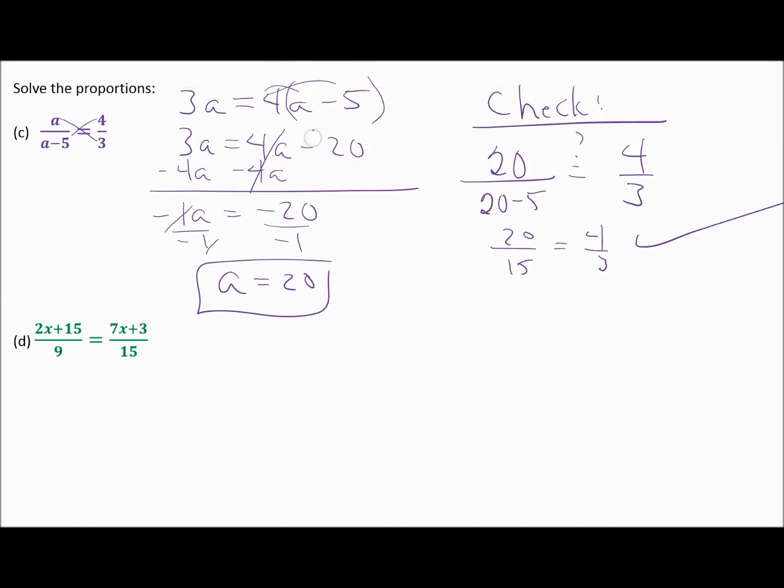Let's try another problem. So I've got to cross here, 15 times 2x plus 15, and that's equal to 9 times 7x plus 3. Again, note the parentheses. If I don't put parentheses there, it only looks like I'm multiplying the 15 times the 2x, which is incorrect. I multiply 15 times the entire numerator, which means I'm using the distributive property. So now I have 30x plus 225, and on the other side, 63x plus 27.